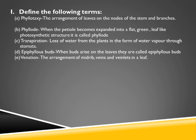Epiphyllous buds: when buds arise on the leaves, they are called epiphyllous buds; example is Bryophyllum. Venation: the arrangement of midrib, veins and veinlets in a leaf is known as venation. There are two types: reticulate venation, in which veins and veinlets form a web-like network — found in dicots; and parallel venation, in which veins and veinlets run parallel to each other — found in monocots.